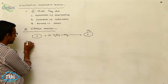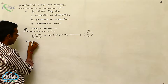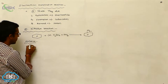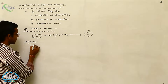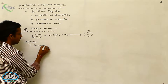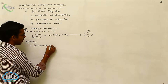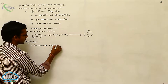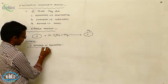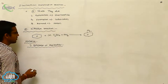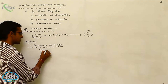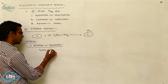Now let's see the mechanism of the nitration reaction. In the first step — same as before — this is also an electrophilic substitution reaction. The first step is the generation of the electrophile. In this step, H₂SO₄ (sulfuric acid) reacts with HNO₃ (nitric acid).